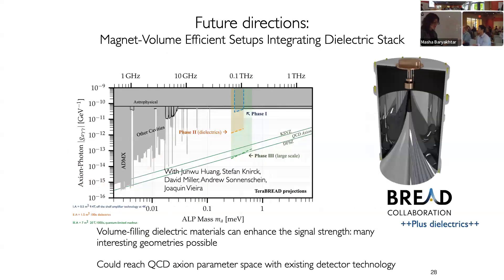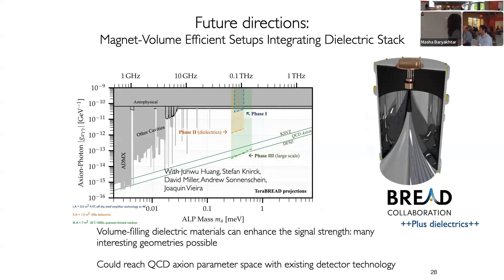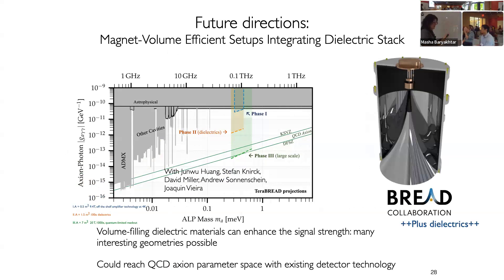We've also talked to folks at the BREAD collaboration, where if we add additional dielectric stack enhancements to their mirror geometry, you could already with current techniques potentially reach the QCD axion line. These are projections of what you could do if you add some dielectric layers to the BREAD geometry.